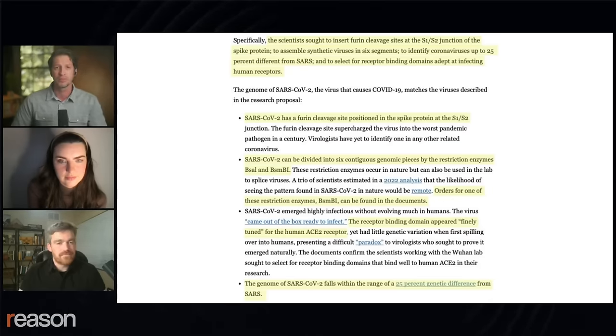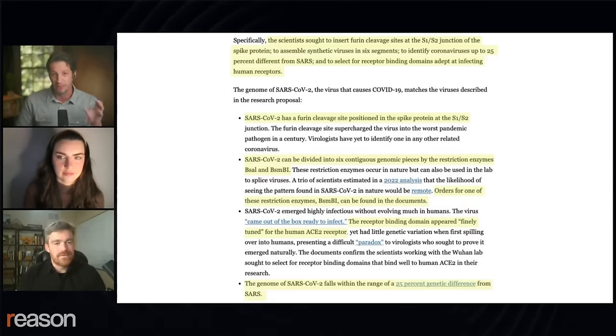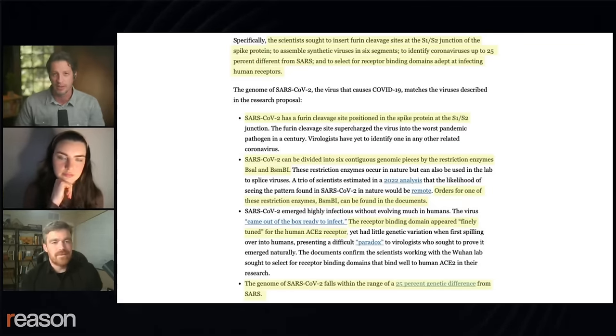Here I want to bring in Alex to help explain the significance of their plans to assemble the viruses specifically in those six segments using some very specific enzymes. The Diffuse grant was proposed to the DARPA preempt call in 2018, and I had helped write a successful submission as well, so this call is very intimately familiar to me.